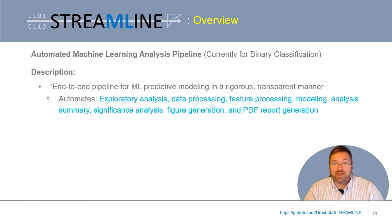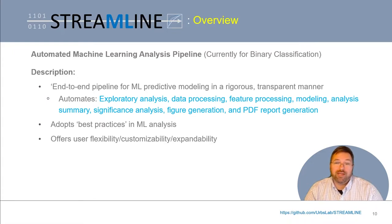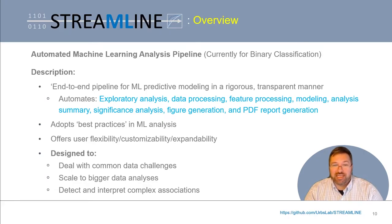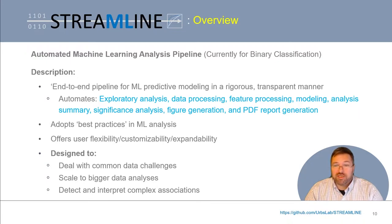Furthermore, everything produced by Streamline is saved and organized in an experiment folder for each new analysis. In assembling Streamline, we sought to adopt best practices in machine learning analysis. The software comes with default settings so a user can more or less click a button and run everything with reasonable confidence, but it's also set up with flexibility, customizability, and expandability in mind. Three other critical goals were that the pipeline should deal with common data challenges such as mixed feature types, missing data, and imbalanced data; allow for scalable use with large datasets; and not sacrifice the ability to detect and interpret complex associations such as epistasis or heterogeneity.